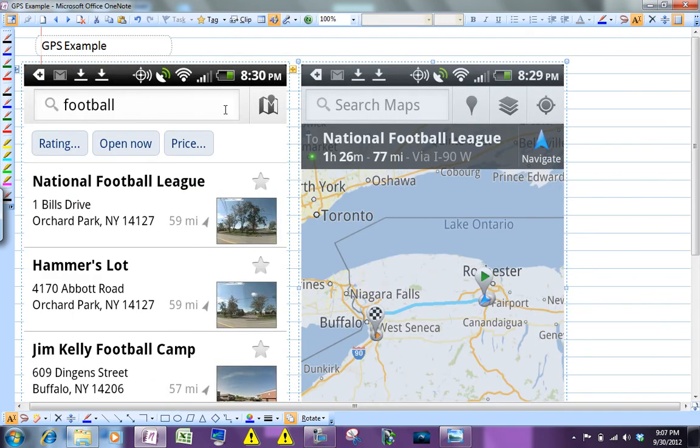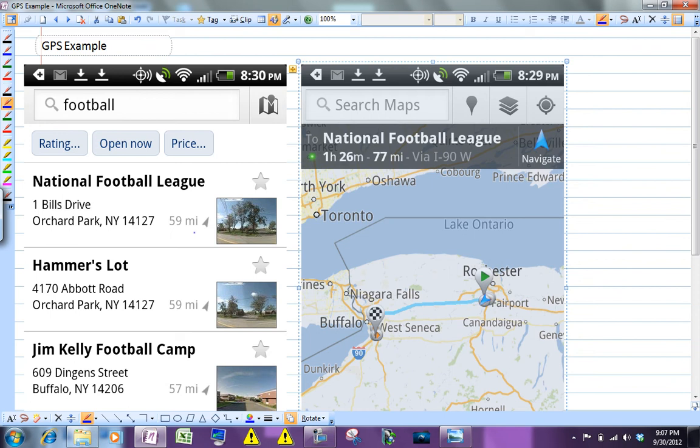Easy way to see that difference is if you were to pull out your phone like I did and put in somewhere. I put in Ralph Wilson Stadium or football here for the Bills, and this arrow tells you the direction it is from where you are at the moment, and it gives you a distance.